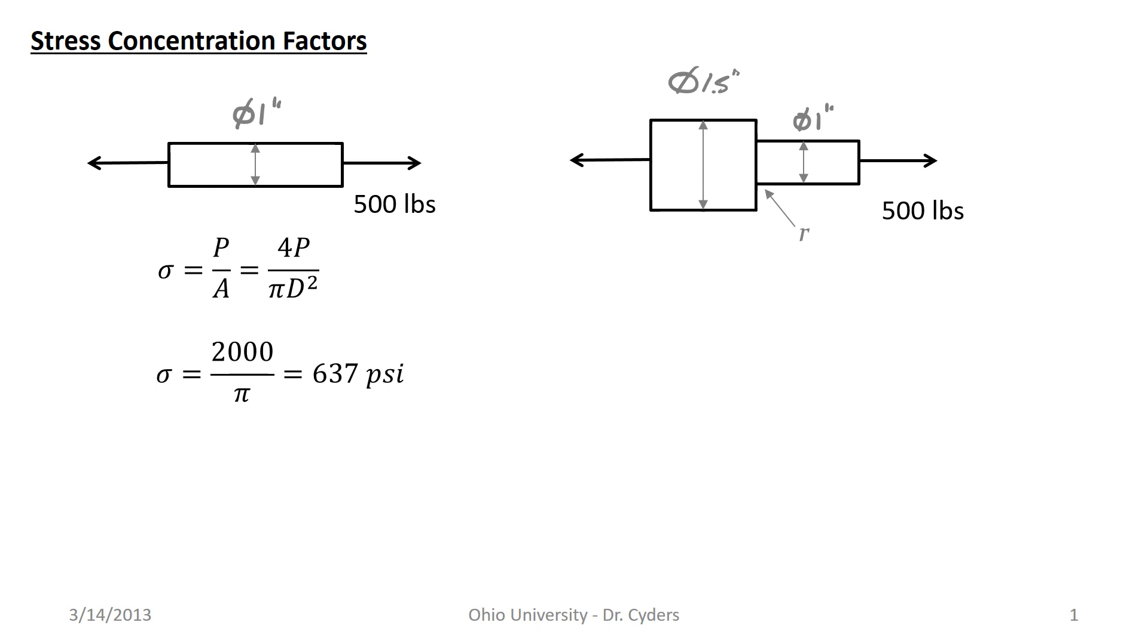But the question becomes, what if we had a geometric change like this added shaft section of a higher diameter? We would expect the stress here and therefore the strain would be lower, and the stress here would be what we just calculated, 637 psi and the strain associated with that. This radius here defines how sharply the strain needs to navigate around that corner.